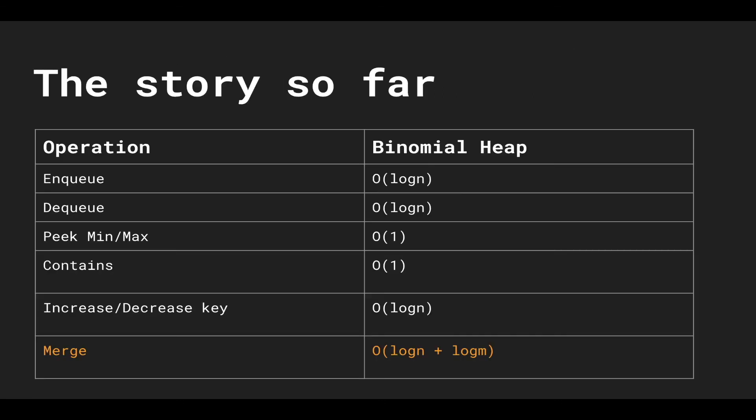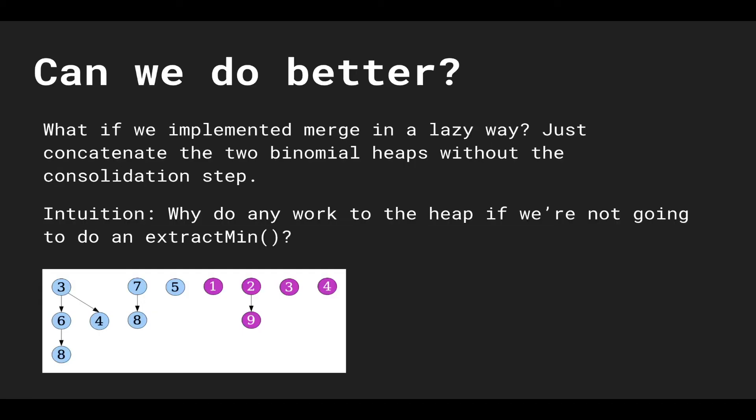So this is the story so far with binomial heaps. Enqueuing and dequeuing don't change besides merge — we still have logarithmic insertions and removals. Peeking and containment checks are constant, and increasing or decreasing a key is logarithmic. Merge is now O(log n + log m), which is better than O(n + m). But the next question is: can we do better than logarithmic? Can we make the merge operation constant?